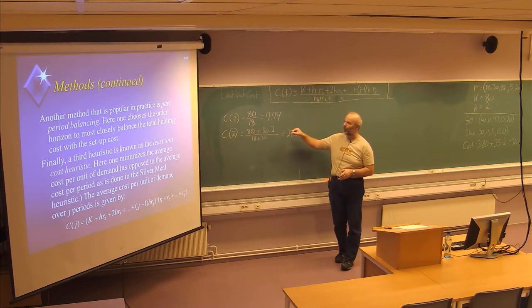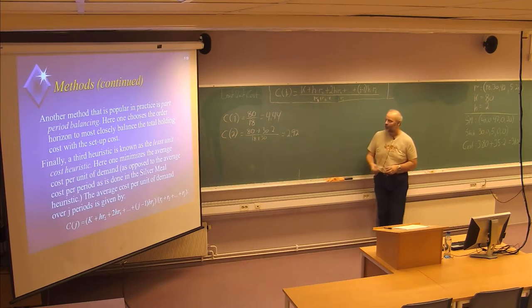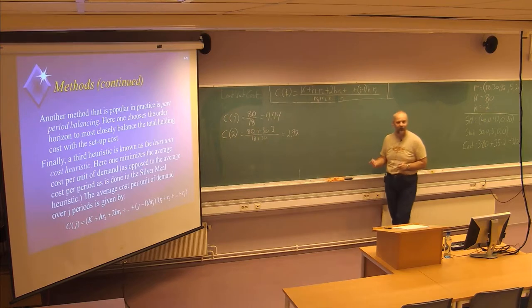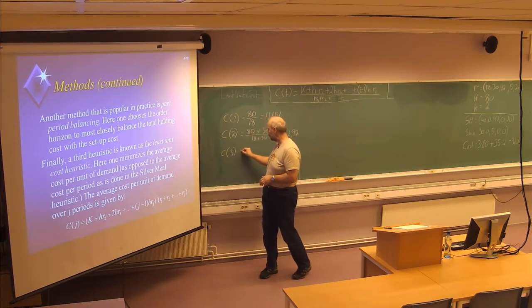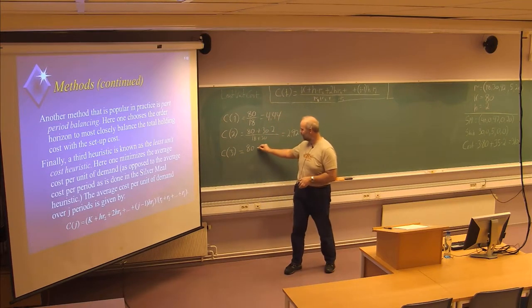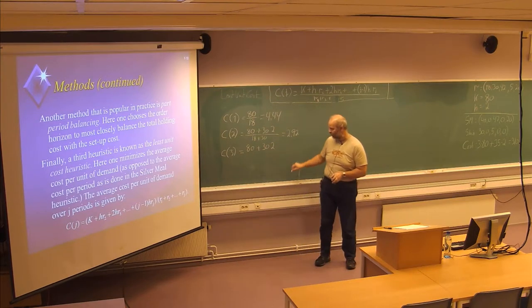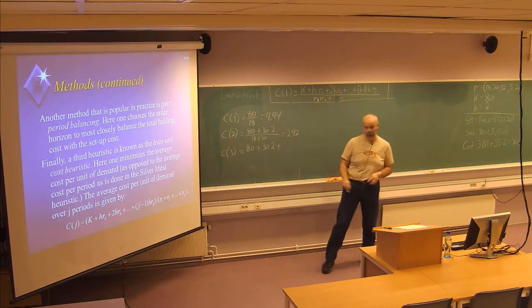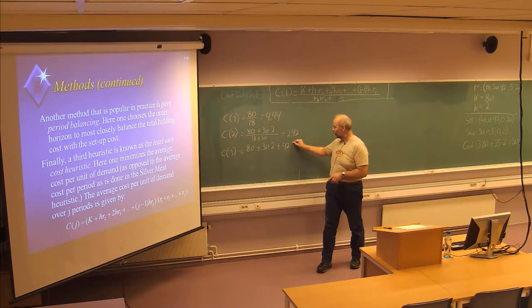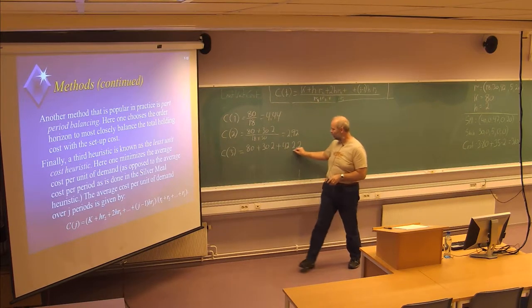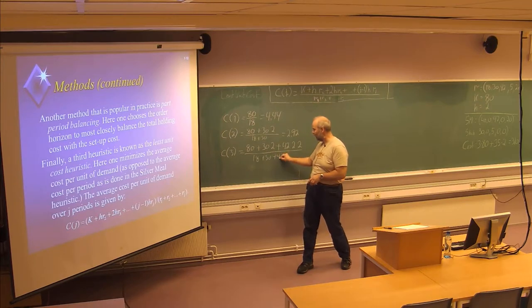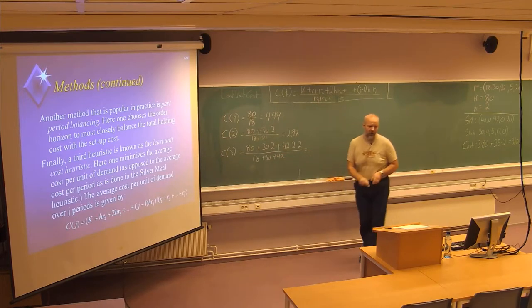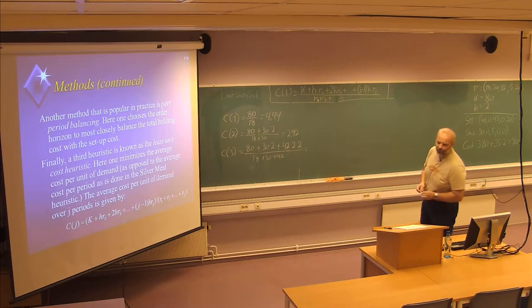Which is a lower average than C(1). So we will continue and check what will happen if we are producing for three periods. C(3): one setup at a cost of 80, 30 items stored in one period at a cost of 2, and 42 items stored in two periods at a cost of 2, divided by 18 plus 30 plus 42. A total of 3.42.